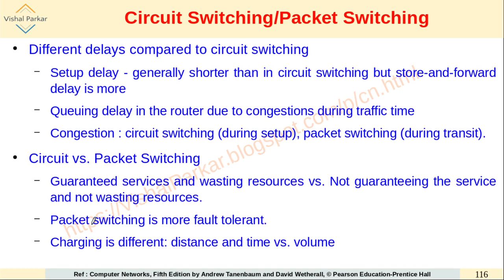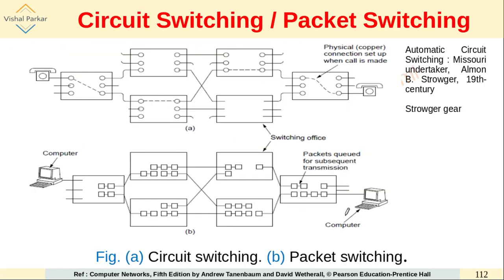Packet switching is more fault tolerant. If a path is broken or a switching circuit goes down, a packet can opt for an alternate path through another switching office, so faults do not necessarily impact delivery. In circuit switching, if a call is routed through a specific switch and that switch goes down, the communication fails entirely — there is no fault tolerance in circuit switching, whereas packet switching handles failures gracefully.